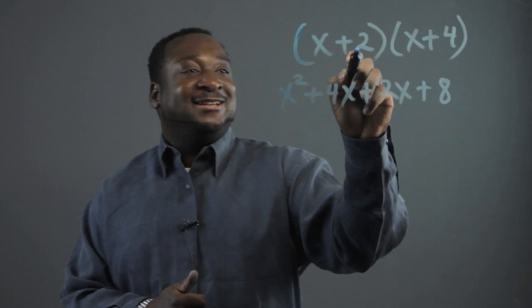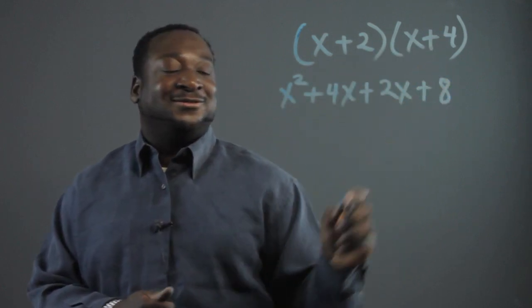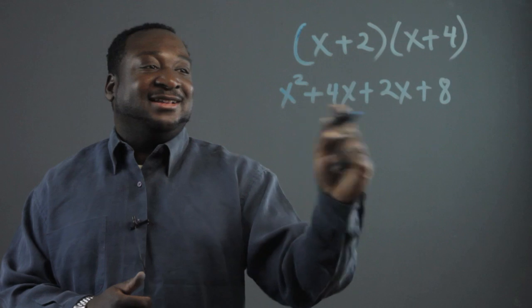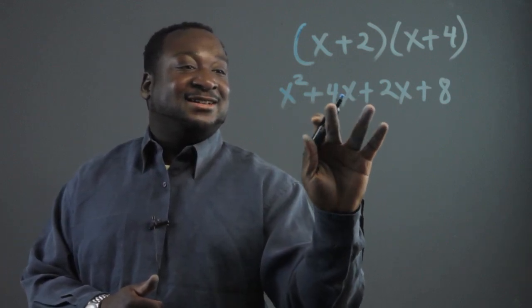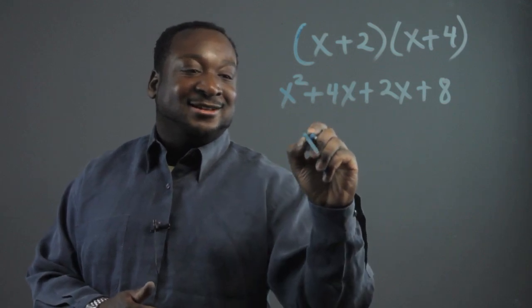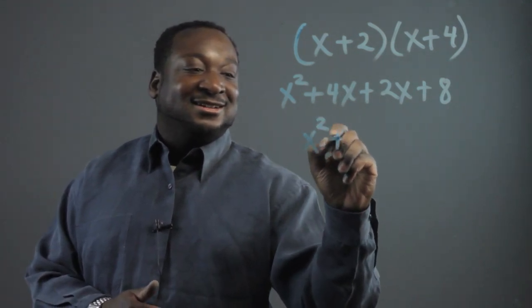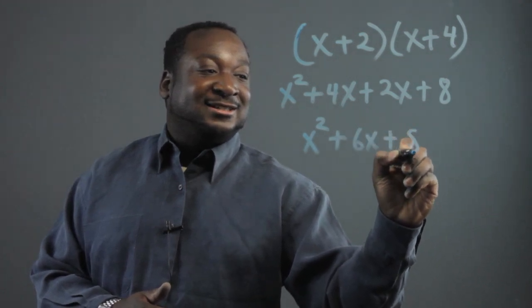I got that and then I did 2 times x and then 2 times 4. And next I just simplify. What's 4x plus 2x? That's 6x. So that's x squared plus 6x plus 8.